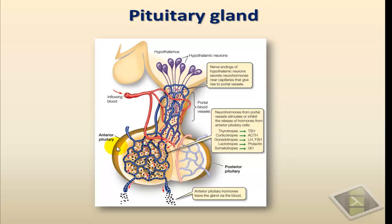The anterior pituitary gland is endocrine by nature — it consists of endocrine tissue. The cells there, and there are different types of cells in the anterior pituitary gland, produce and secrete hormones directly into the blood. The activity of the anterior pituitary gland is affected by signals coming from the hypothalamus. Those signals are chemical by nature; they are released into the bloodstream and travel a short distance through a portal blood system, delivering signals known as releasing hormones into the anterior pituitary gland. Under the effect of those releasing hormones, the anterior pituitary gland releases its own regulatory hormones.